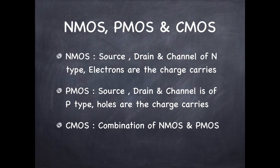If source, drain and channel they are of P types and holes are the charge carriers then we call it PMOS. When we use the combination of both NMOS and PMOS then it is called CMOS. We will discuss all these things in detail in the coming video.